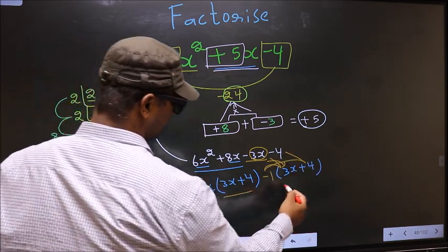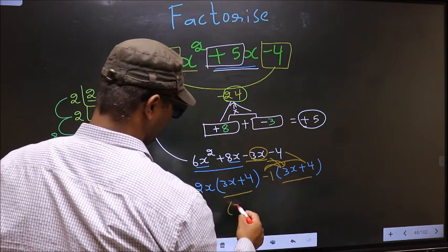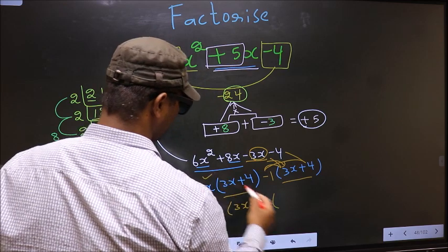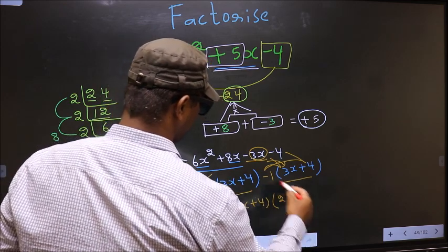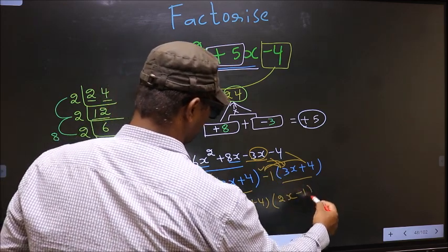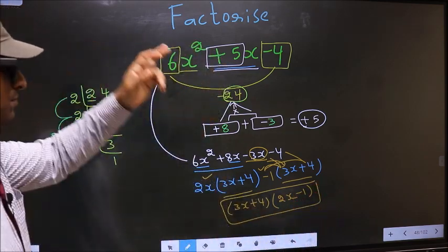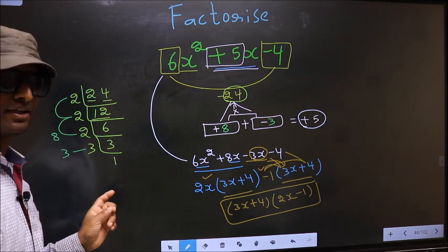Now you take out 3x + 4 common. So here you have 2x, and here you have -1. This is our answer. Am I clear?